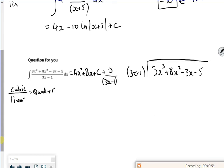So how many times does 3x go into 3x cubed? It's x squared times. x squared times that bit. Remember you're taking away. So it's 8x squared minus a minus x squared. So that's 9x squared, bring down the minus 3x.